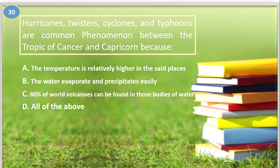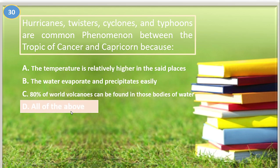Number thirty. Hurricanes, twisters, cyclones, and typhoons are common phenomena between the Tropic of Cancer and Capricorn because: A. The temperature is relatively higher in those places, B. Water evaporates and precipitates easily, C. 80% of the world's volcanoes can be found in those bodies of water, D. All of the above. The answer is letter D, all of the above.